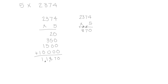Then we have two thousands, five times would be ten thousands, plus one more would be eleven thousand. So we have the same product for both. We're doing the same thing — we're just recording this in a single step when we use the standard algorithm, as opposed to recording each of the partial products separately.